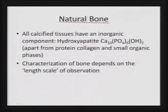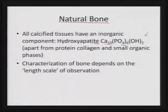Talking about natural bone, generally all the calcified tissues have some inorganic component that is hydroxyapatite. It is a basic fundamental unit of Ca₅(PO₄)₃OH, and each of those two units are occupied in a unit cell, giving rise to Ca₁₀(PO₄)₆(OH)₂. Apart from that, it also has a protein collagenous content and certain other organic phases present on those calcified tissues. It is very essential to learn how the characterization of bone depends on the length scale of observation.